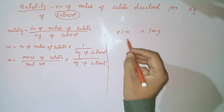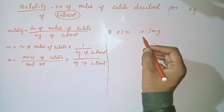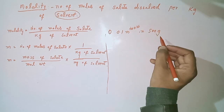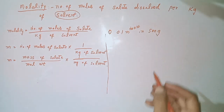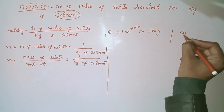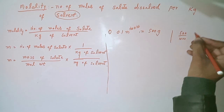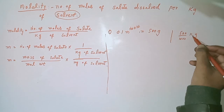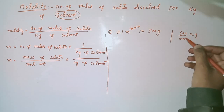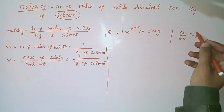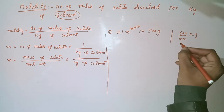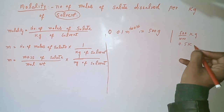If we want to prepare a 0.1 molal solution of sodium hydroxide in 500 grams of solvent, first we convert 500 grams into kilograms. We divide 500 by 1000 — kilo means thousand — so 500 divided by 1000 equals 0.5 kilograms.